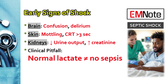We look straight at the brain, the skin, and the kidneys. For the brain: any acute confusion, delirium, or altered mental state is a huge red flag. For the skin: that mottling, cool limbs, or check capillary refill time — if it's over three seconds, that's significant. For the kidneys: urine output dropping off, or creatinine starting to climb. These are direct signs of hypoperfusion.